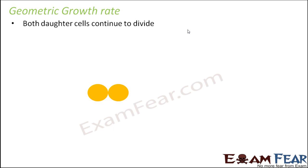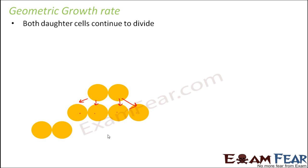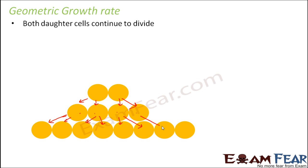So it would be something like this. If you start with two cells, each of them would divide. So if you see here, this cell divided to form these two and this cell divided to form these two. Now again each of these four daughter cells will divide, so this will form these two, again this will form these two, this will form these two and this will form these two. And now if you see there are eight cells which are formed and each of them will divide further to form more cells.